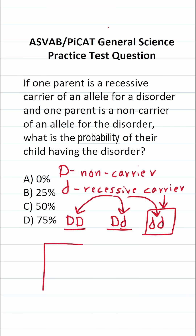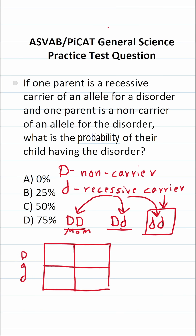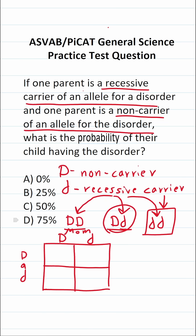In order to calculate the probability of their child having the disorder, we're going to use what's called a Punnett square, which is something you probably used in freshman level biology in high school. We're talking about offspring, so we're going to need a mom and a dad. The mom is the recessive carrier of the allele for the disorder, so her genotype is going to be big D, little d. The dad is the non-carrier, so his genotype is big D, big D.